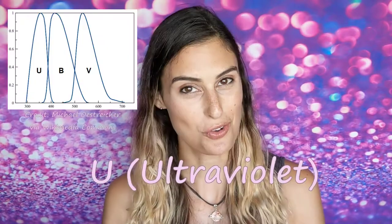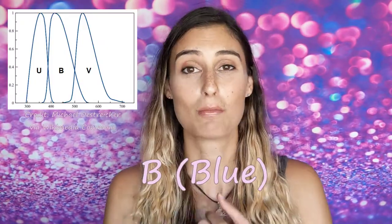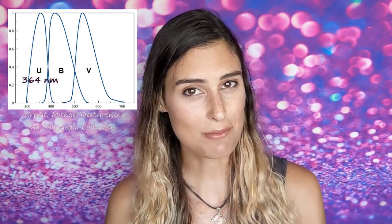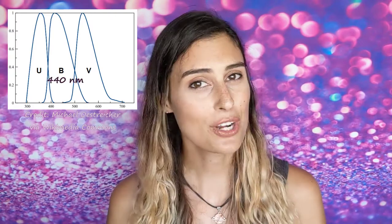For the UBV system, those bands are called, as you might guess, U for ultraviolet, B for blue, and V for visible. The U band is centered on a wavelength of 364 nanometers, while B is centered at 440 nanometers, and V is centered at 550 nanometers, and all of these bands have a width that's about 100 nanometers or a little bit less.